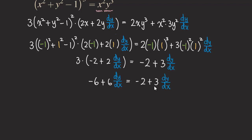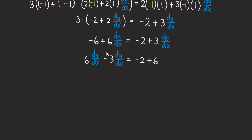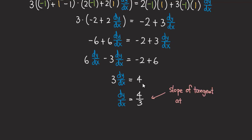Now we solve for dy/dx. Moving 3·(dy/dx) to the left side and -6 to the right side: 6·(dy/dx) - 3·(dy/dx) = -2 + 6, so 3·(dy/dx) = 4, giving dy/dx = 4/3. This is the slope of the tangent line at the point (-1, 1).